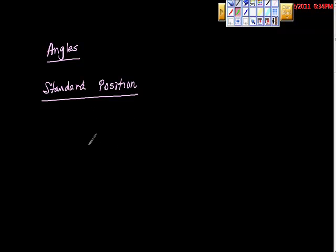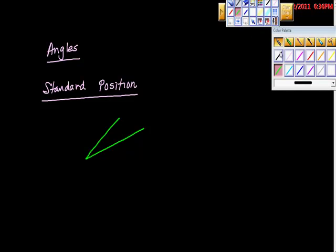I just want to talk about what standard position means, so when you hear this in trig, you'll know what your professor is talking about. So here's your angle right here. What we're going to do when we talk about having an angle in standard position is to take our angle and overlay it onto the Cartesian plane. So here's the Cartesian plane.